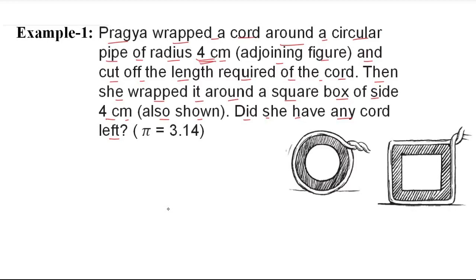Pragya wrapped a cord around a circular pipe with radius 4 cm. If it is wrapped around the pipe, we need to find the circumference, and the radius is already given as 4 cm. Then the cord is wrapped around a square with side 4 cm. If you wrap it around a square, you wrap it around the perimeter of the square. So we need to compare and find out if any cord is saved.